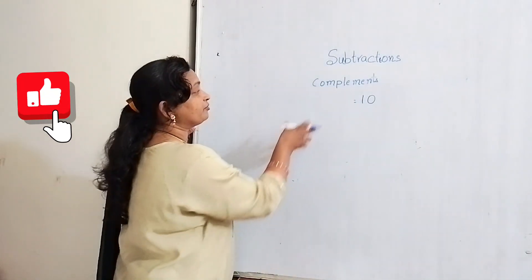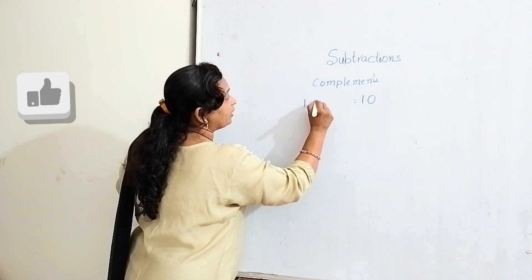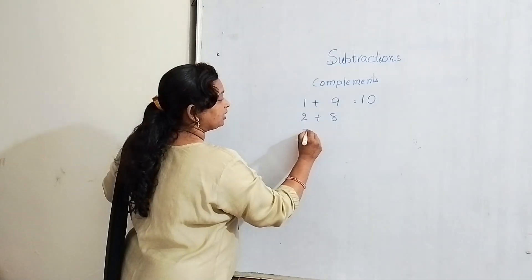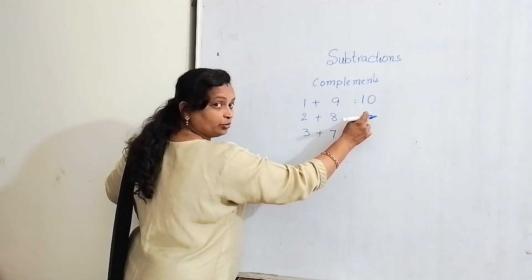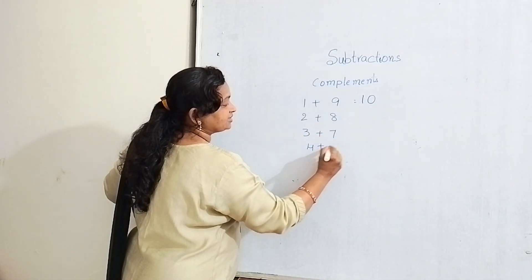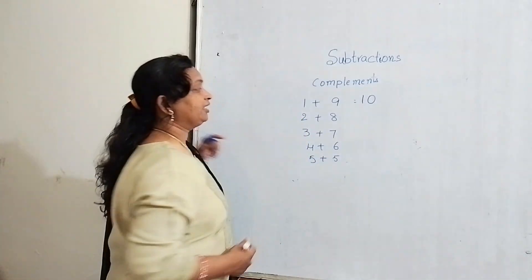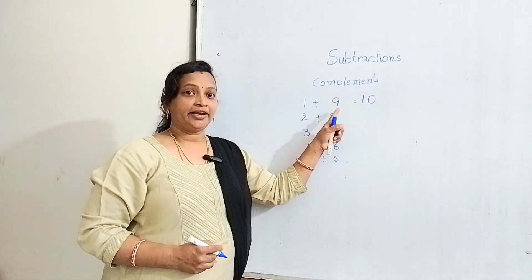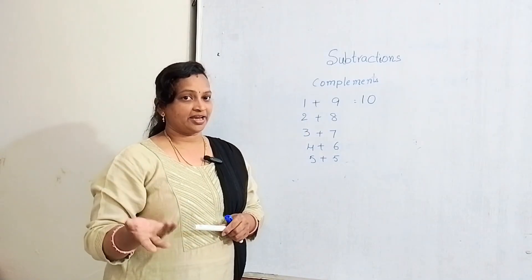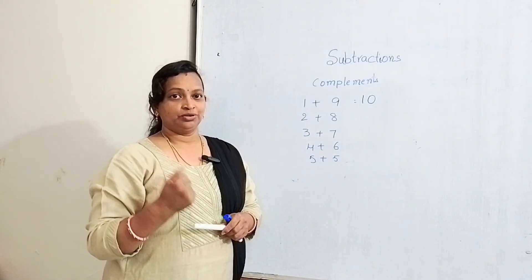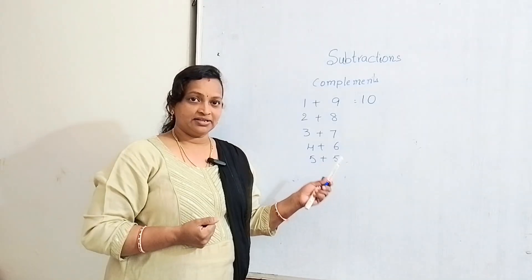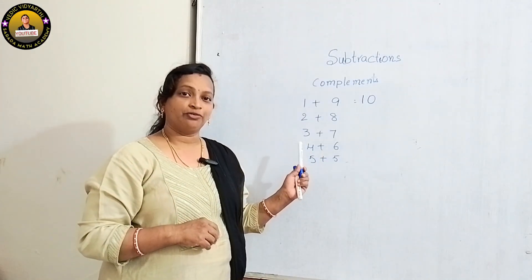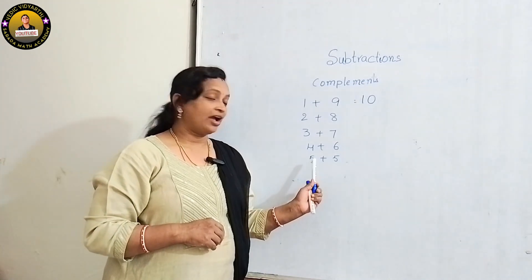From 1 to 9, choosing pairs: 1 plus 9 is 10, 2 plus 8 is 10, 3 plus 7 is 10, 4 plus 6 is 10, 5 plus 5 is 10. These are the complements. So: complement of 1 is 9, complement of 2 is 8, complement of 3 is 7, complement of 4 is 6, complement of 5 is 5.